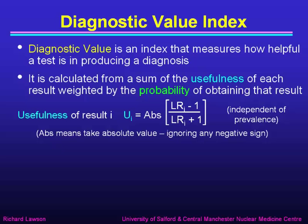The first thing to note is that we already know the likelihood ratio is independent of prevalence, and so the likelihood ratio minus 1 divided by the likelihood ratio plus 1 will also be independent of prevalence. So this is truly a number that tells us something about the test, rather than about the population that we're looking at.